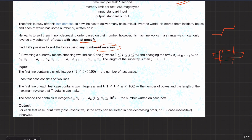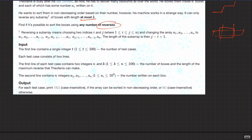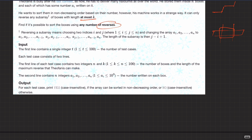Here is the input format. The first line contains a single integer t — the number of test cases. Each test case consists of two lines. The first line contains integers n and k, where n is the size of the array and k is the maximum size of the sub-array that we can reverse at a time. The second line contains our array.